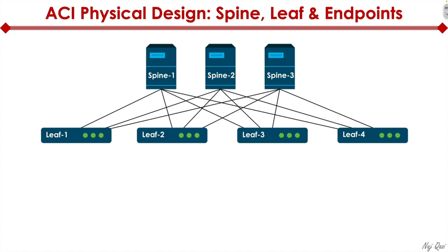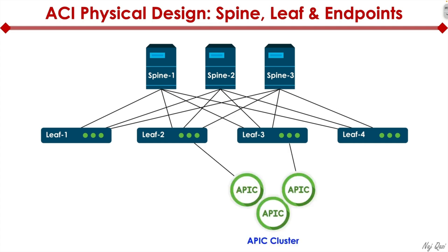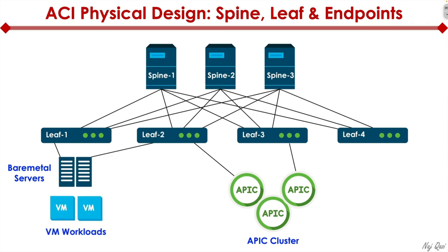Let's dig into the physical design aspect of ACI. All endpoints connect into leaf switches — nothing connects directly into the spine. There are some advanced designs where certain elements may plug into the spine, but at the CCNA level, keep in mind that nothing plugs into the spine and everything plugs into the leaf. For network endpoints, that includes APIC controllers — and typically you would get a cluster of three APIC controllers to have quorum, high availability, and redundancy.